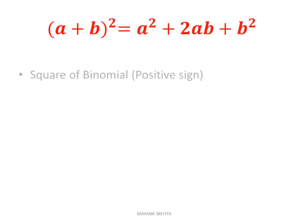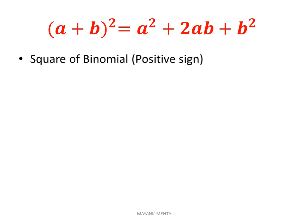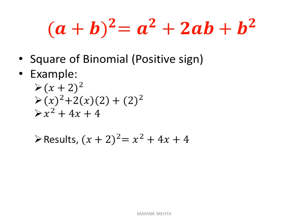First we will take the identity (a+b)². This is the square of any binomial. If a binomial is given and you need to square it, follow these steps: first, square the first term. If there is a positive sign between the two terms in the binomial, the middle term will be positive, and the middle term is 2ab — that means 2 times the first term times the second term. I have taken one example: (x+2)².